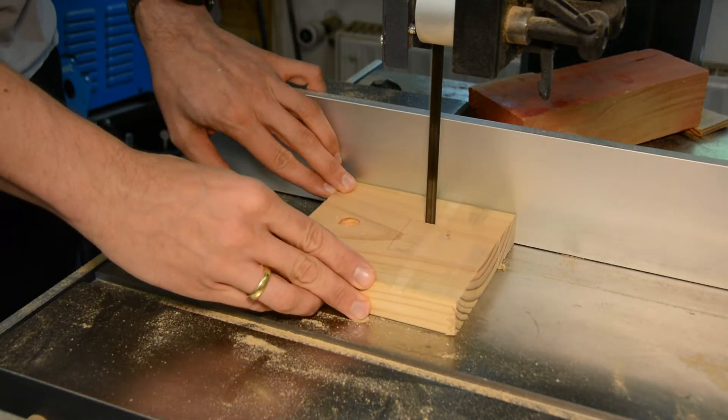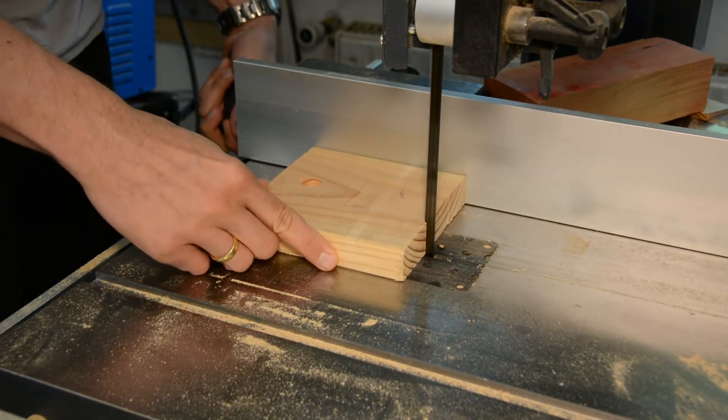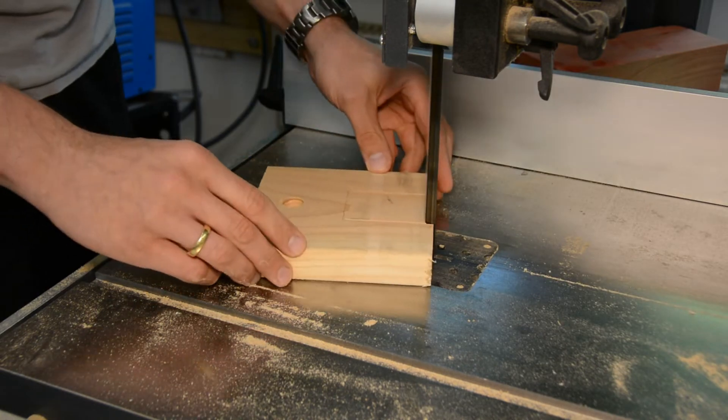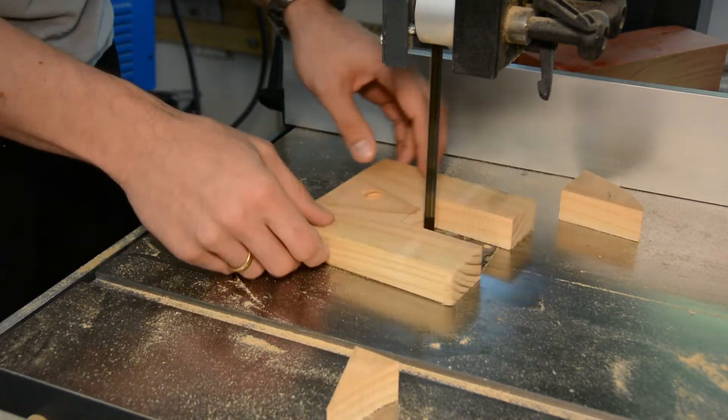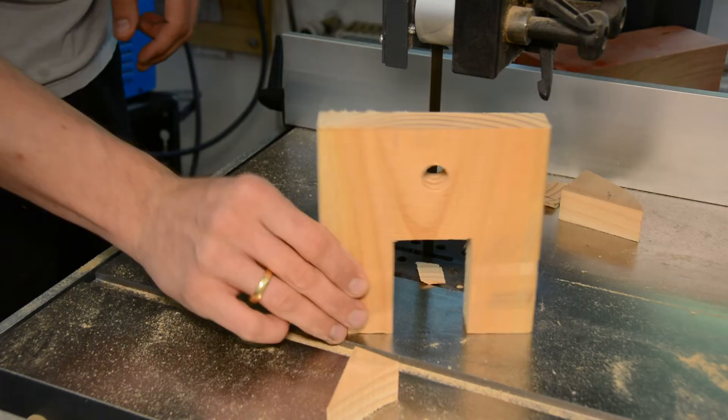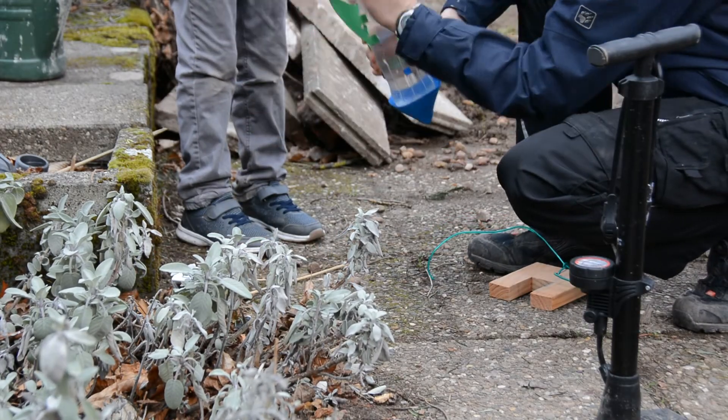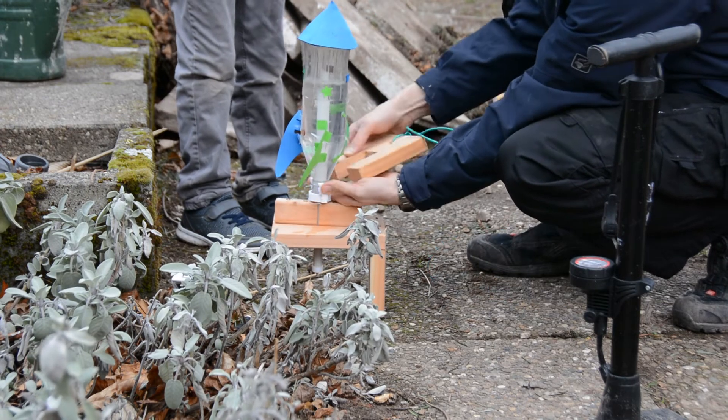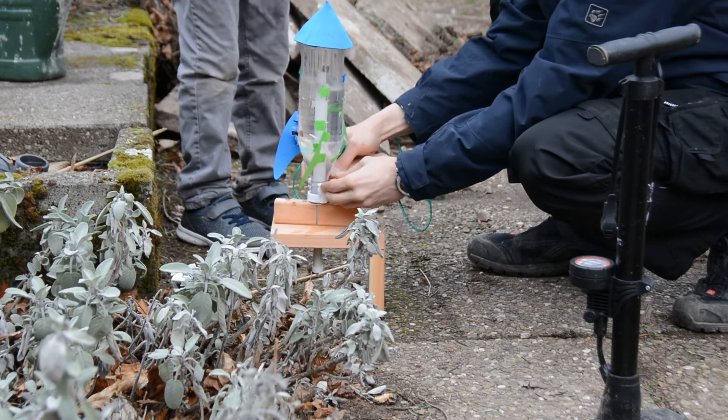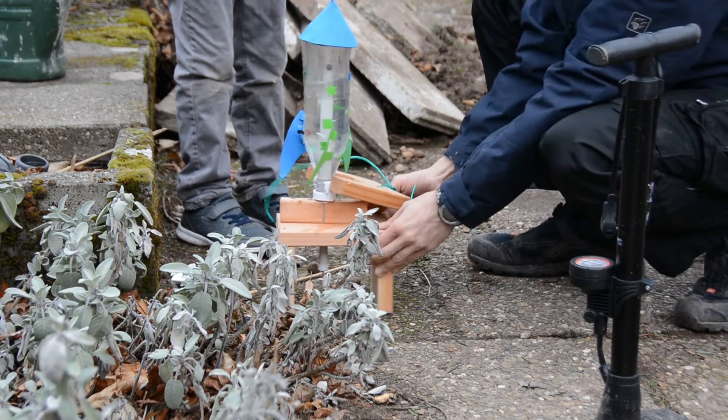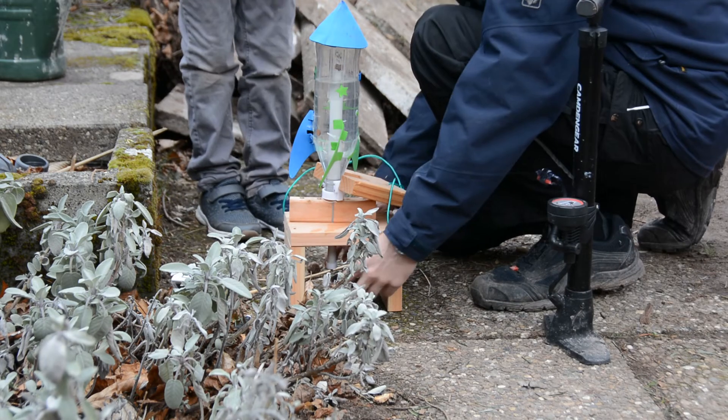The last thing missing is a remote trigger. At the moment you would have to hold the brackets with your hand and would get wet during the launch. So we cut more scraps in shape on the bandsaw. The parts can now be slid over the two brackets and hold them tight while pressure is being built up in the bottle. With a piece of rope attached to it, you can pull the trigger and launch the rocket.